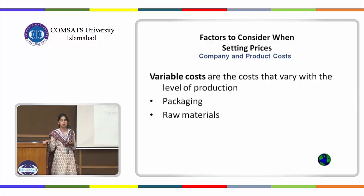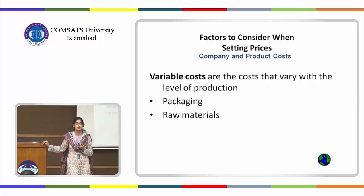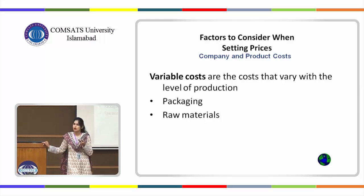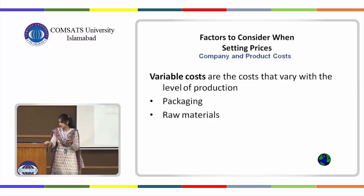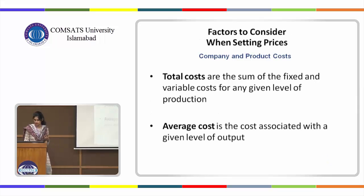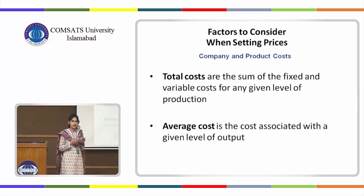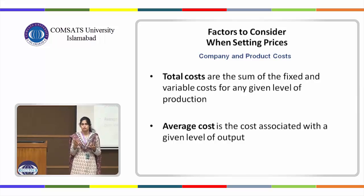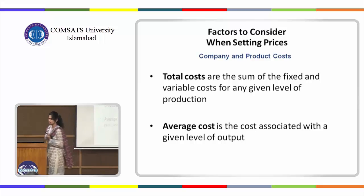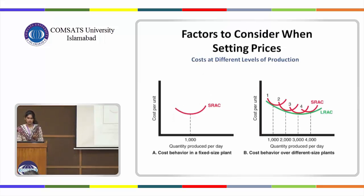Variable cost is the cost that changes with the number of units you produce — raw material and packaging cost more if you produce more product. Total cost is fixed cost plus variable cost. Average cost is the cost associated with a given level of output.